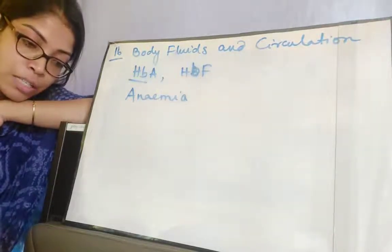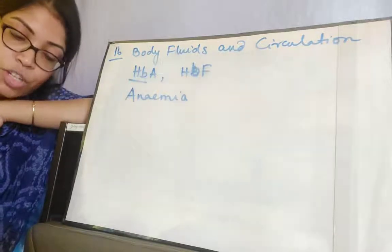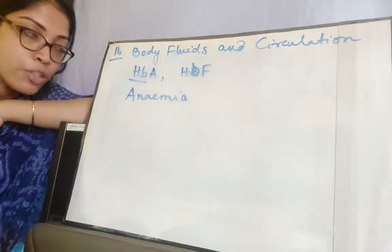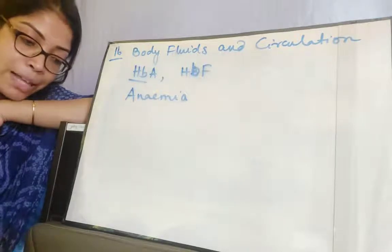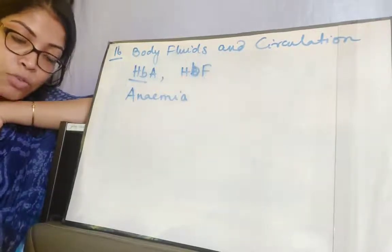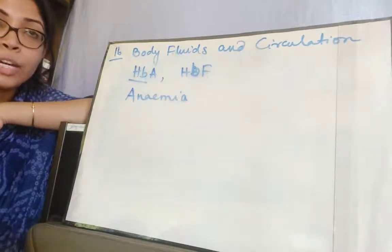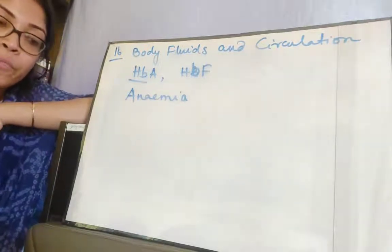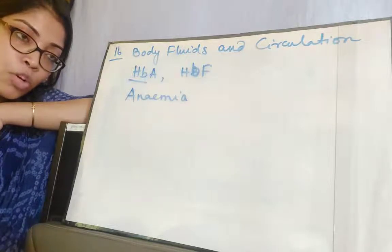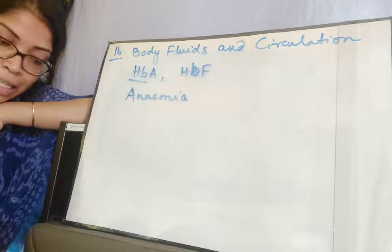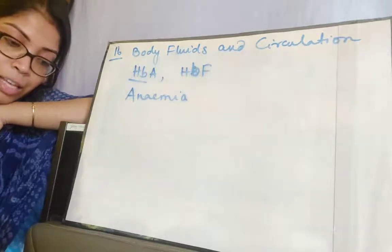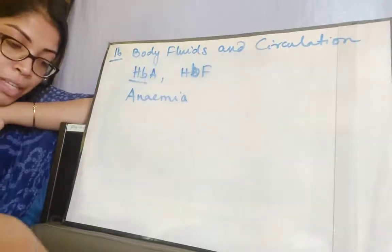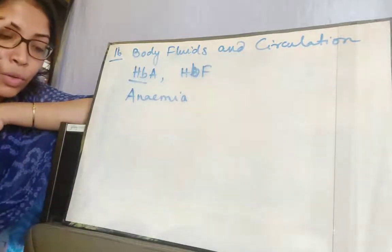Pernicious anemia is caused by inadequate intrinsic factor of gastric juice, which is needed for absorption of vitamin B12 from the small intestine. Hemolytic anemia is due to premature rupture of RBCs. Aplastic anemia results from destruction of red bone marrow — since red bone marrow is the source of hemoglobin in adults. Finally, thalassemia is a hereditary disease. These are all the types of anemia covered in your book.